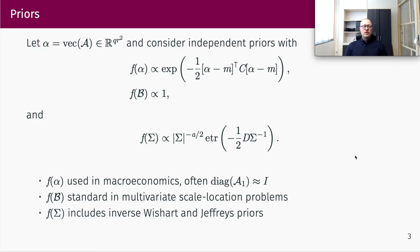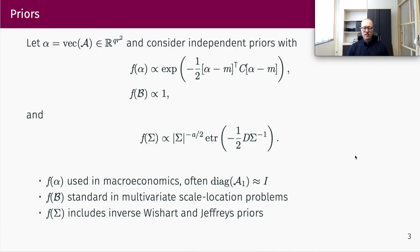We consider the following priors on the model parameters. I use alpha to denote the vectorization of capital alpha, obtained by stacking the columns of that matrix. To alpha, we assign a multivariate normal prior, which can be proper but need not be — C could be zero, giving a flat prior. However, as we will see, we typically consider a positive definite C. For the regression coefficient beta, we assume a flat prior, standard in multivariate scale-location problems, and for Sigma we have a family of priors including the inverse Wishart and the Jeffreys prior.